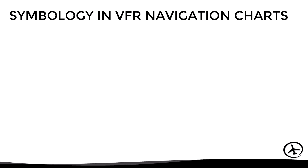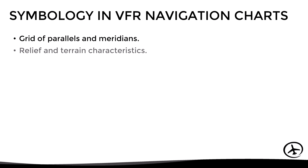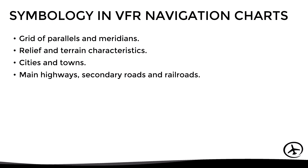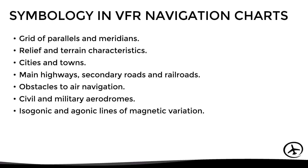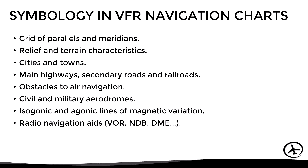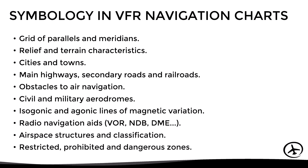In the same way, a VFR chart will focus on displaying information relevant to air navigation. In general terms, any VFR chart will have a grid of parallels and meridians, terrain relief and characteristics, cities and towns, main highways, secondary roads and railroads, obstacles relevant to air navigation, civil and military aerodromes, isogonic and agonic lines of magnetic variation, radio navigation aids such as VORs and NDBs, airspace structures and classification, as well as restricted, prohibited, and dangerous zones.